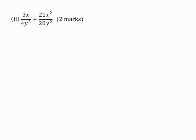Part 2: Simplify 3x over 4y cubed divided by 21x squared over 20y squared, for 2 marks.